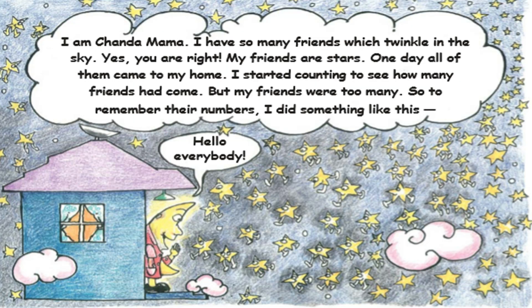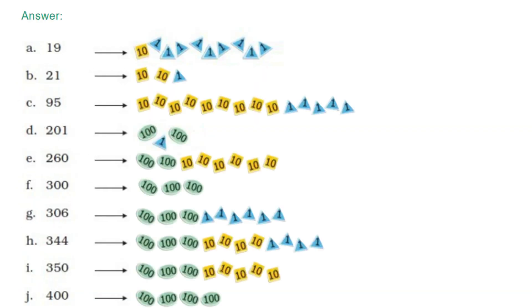I am Chanda Mama. I have many friends — stars — that twinkle in the sky. One day they all came to my house and I started counting them. To remember their numbers I used cards: for 19, a square card of 10 and 9 triangles; for 21, two square cards and one triangular card; for 95, nine 10-cards and five 1-cards; for 201, two 100-cards and one triangular card.